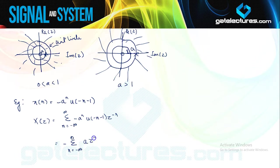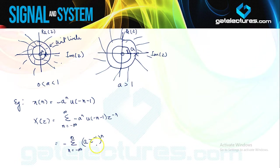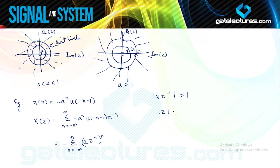This is also a GP, but a decreasing GP — each time we divide by this factor. For this sequence to converge, the common factor must be greater than 1. Only if the common factor is greater than 1 will we obtain a convergent series. So in this case, we need |a*Z^(−1)| to be greater than 1, or equivalently, |Z| must be less than |a|.